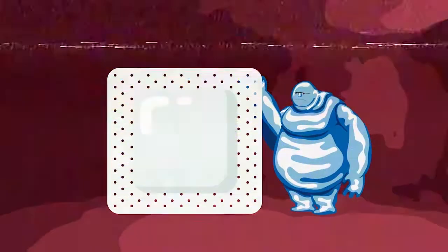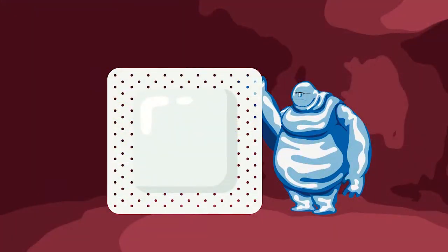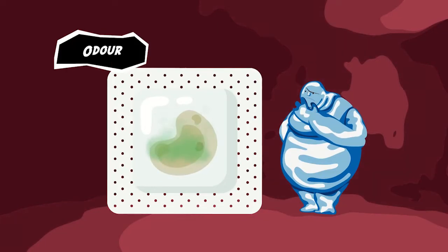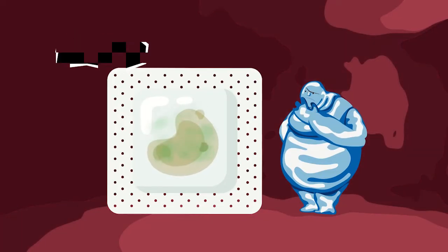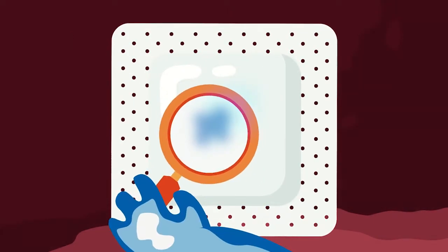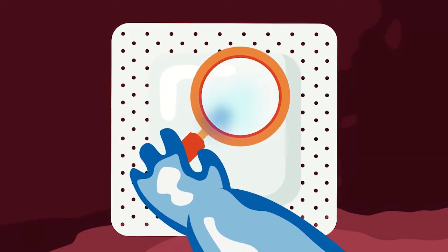To assess exudate, there are some key things to look out for, including colour, odour, consistency and amount. Examining the wound dressing before and after removal gives an indication of the type of exudate and how the dressing is performing.